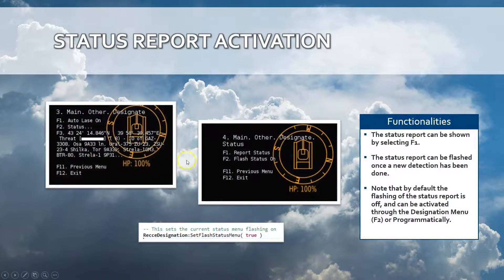You can activate the status menu by selecting the F2 option status, and then you can flash the status on and off. When a detection happens, the status report will be automatically shown. Or you can just display immediately the status report by selecting F1. There is a method available that allows you to activate the flashing of the status report automatically when a detection has been done.